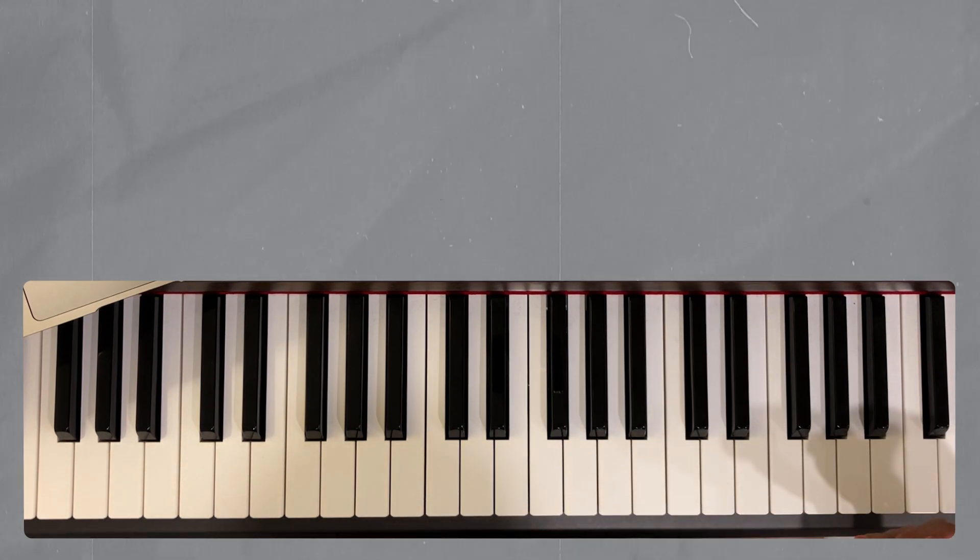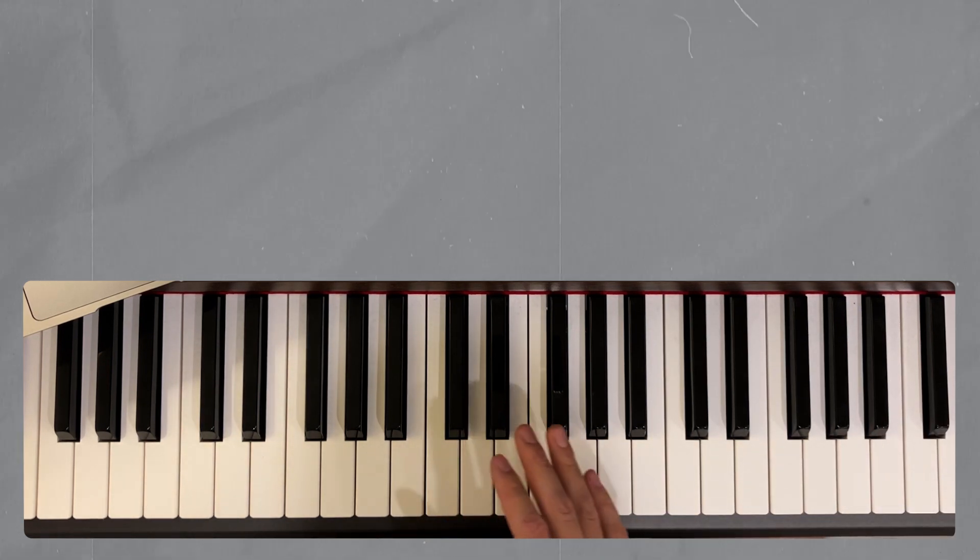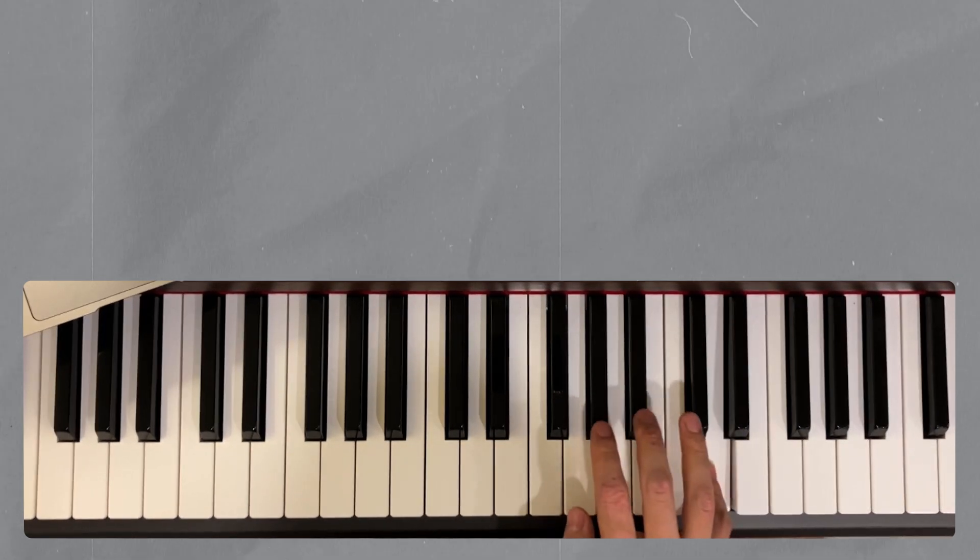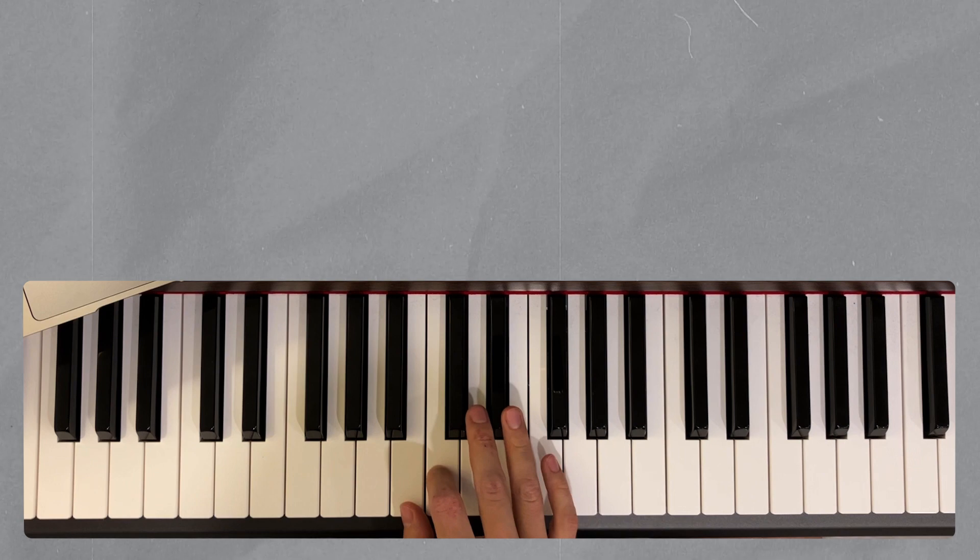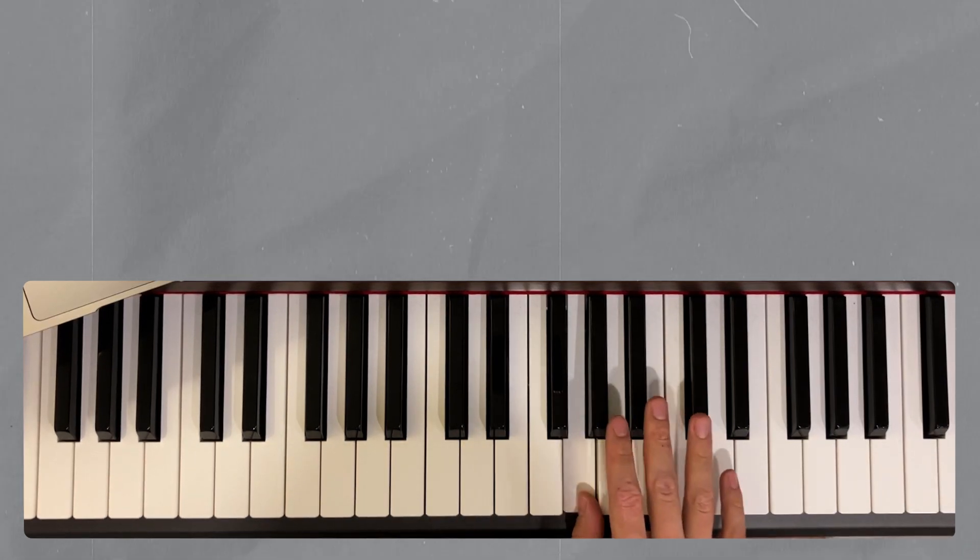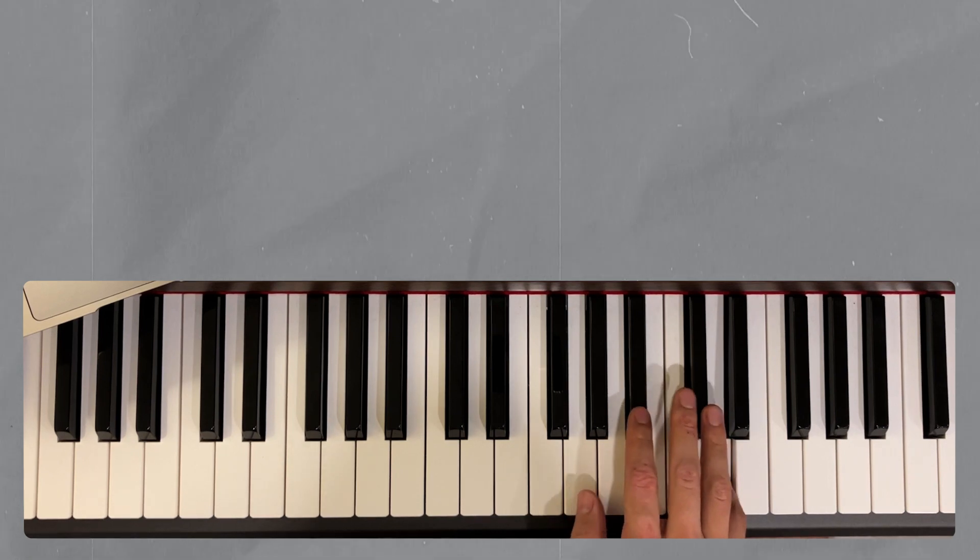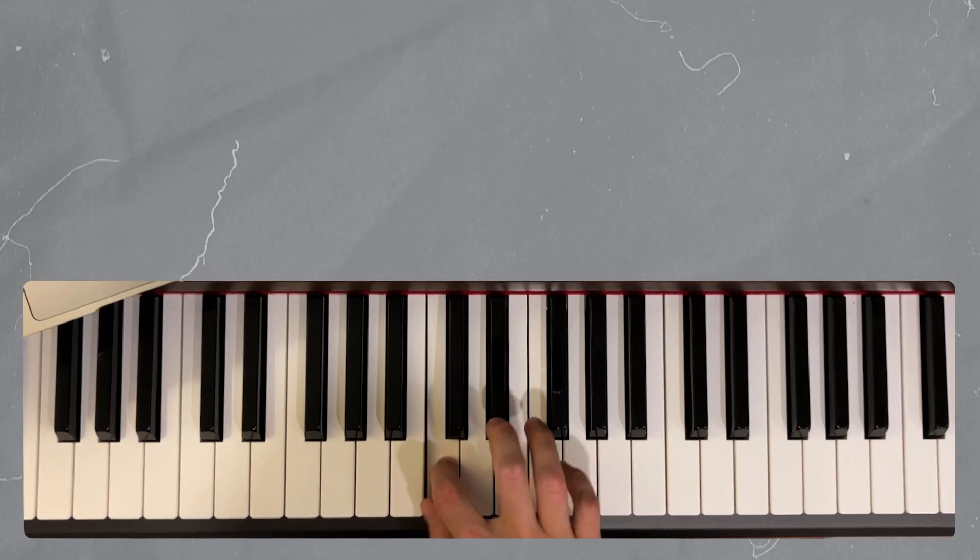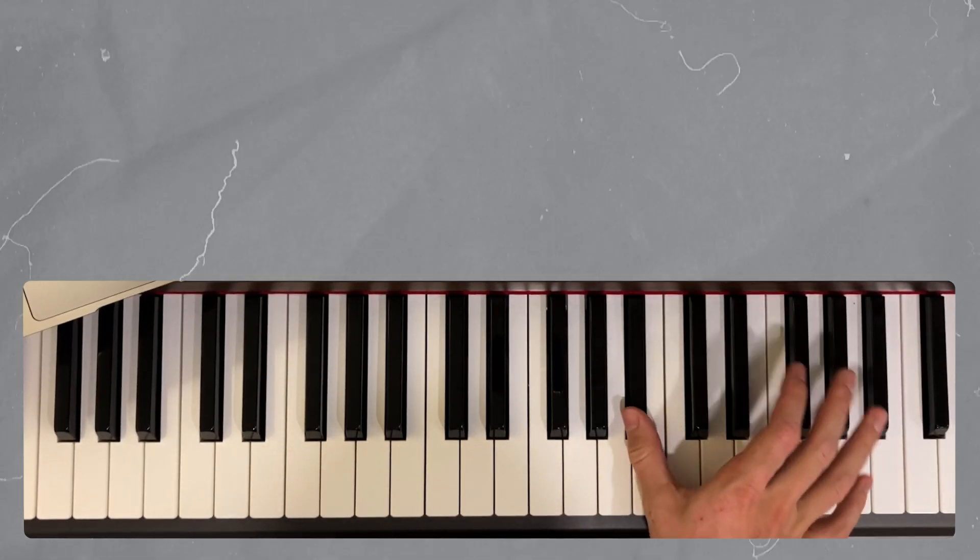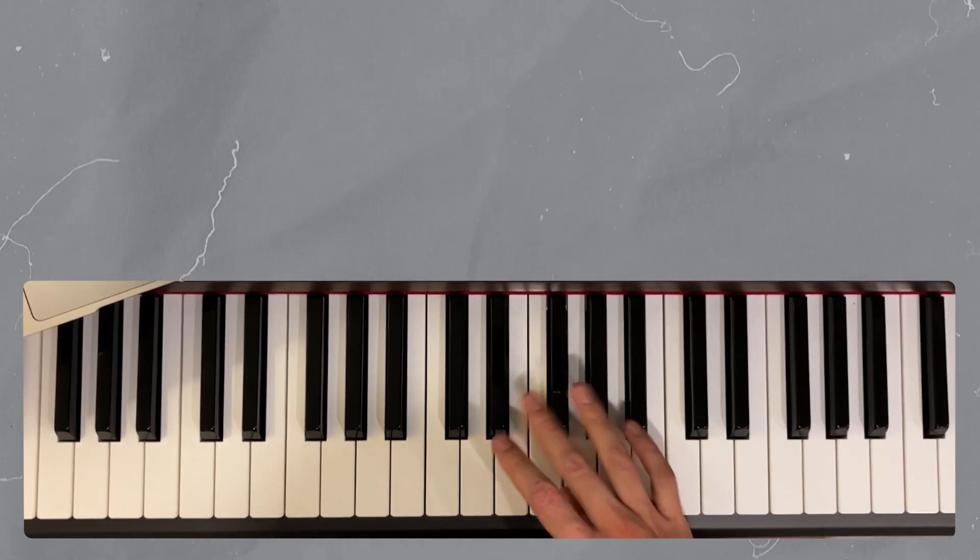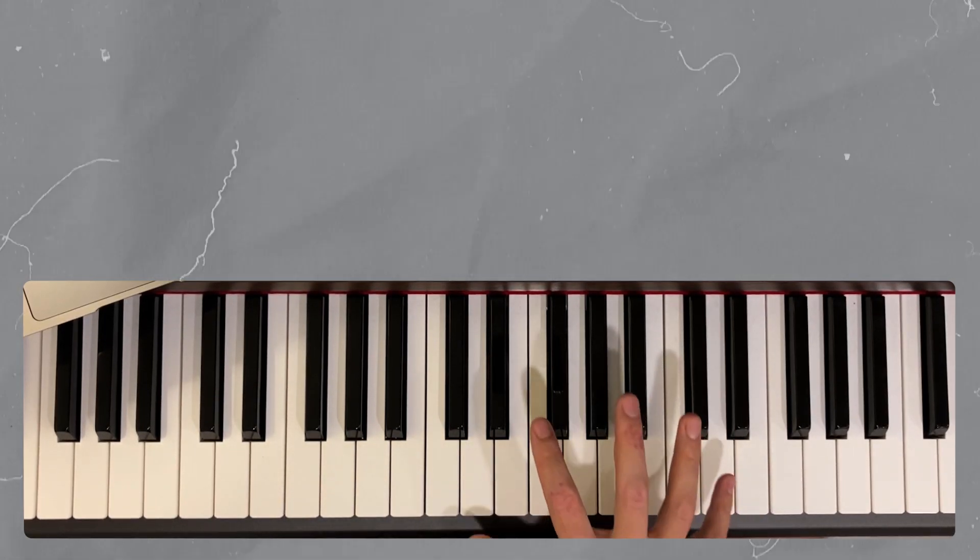As another example, if I'm ascending a C minor 9, maybe something like this. Then you see I have this crossover motion. I'm really keeping my hand open and I'm not doing any kind of weird thumbs. The thumbs going on the black notes feels very uncomfortable. I'm not doing any weird motions, I'm just staying very fluid.